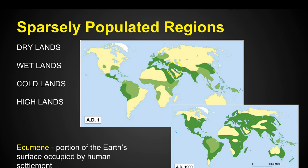People are living around the water where they can irrigate their crops, move more freely, transport goods, and connect with other cultures. Fast forward to the 1900s and you can see that the ecumen has greatly expanded due to technological advancements and population growing.